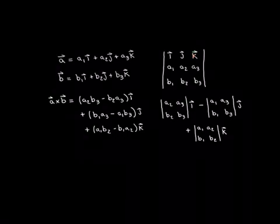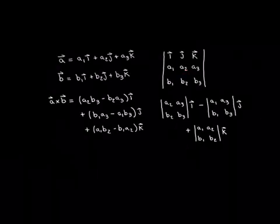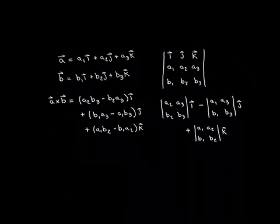Finally, we go to K, we cover up its row, its column, we take the determinant of the remaining 2x2 matrix, which is here, and we multiply that by K, and this time we want to add that on. When we take the determinants of these 2x2 matrices, the way you do that is you multiply this one by this one, and you subtract off this one multiplied by this one.